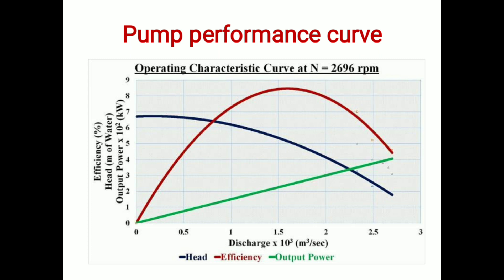What is a pump performance curve? An industrial centrifugal pump performance curve looks like this. We are plotting three curves: the first curve is discharge versus efficiency — the red one is discharge versus efficiency. The second curve is head versus discharge. The third curve is output power versus discharge. On the x-axis we are plotting discharge or flow in cubic meters per second or any other unit.